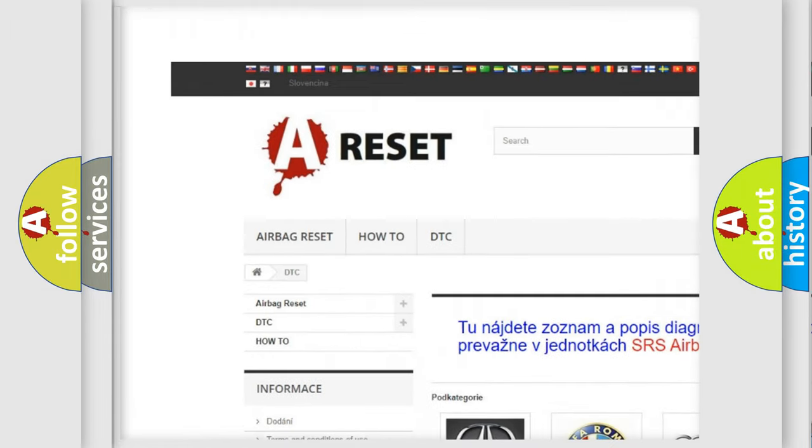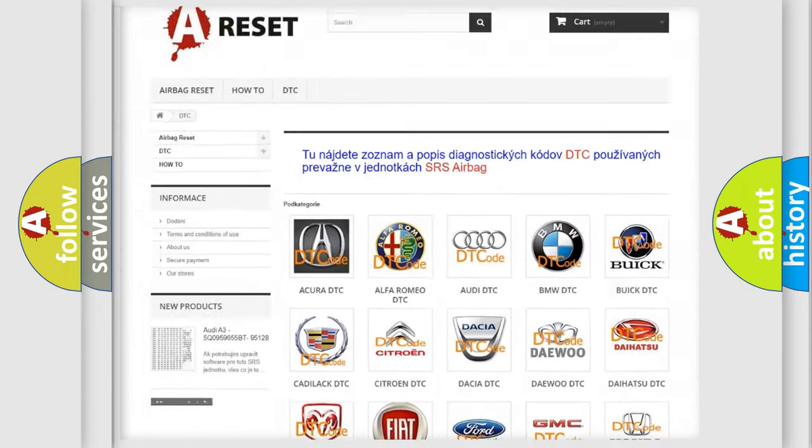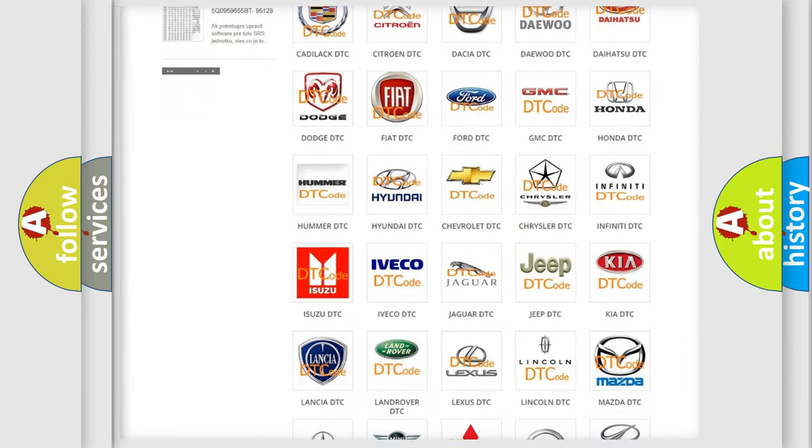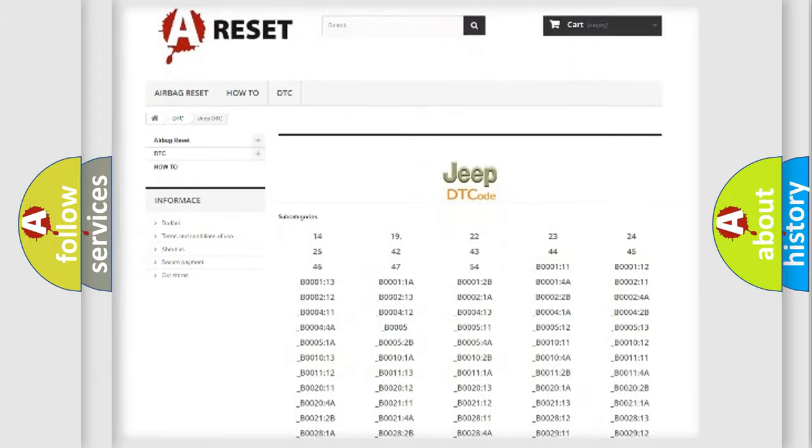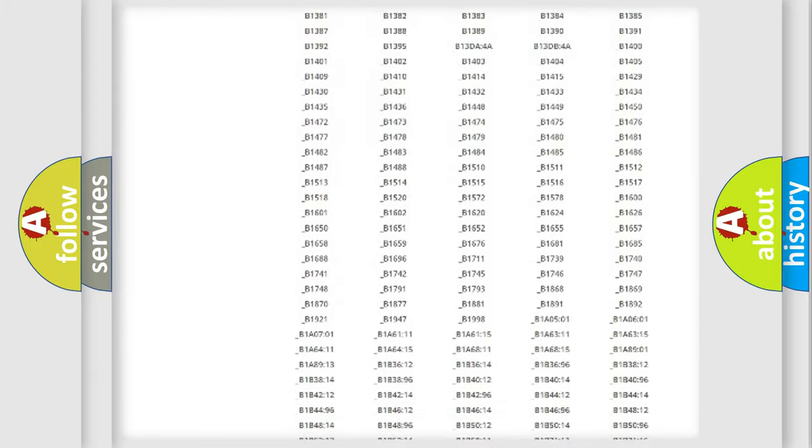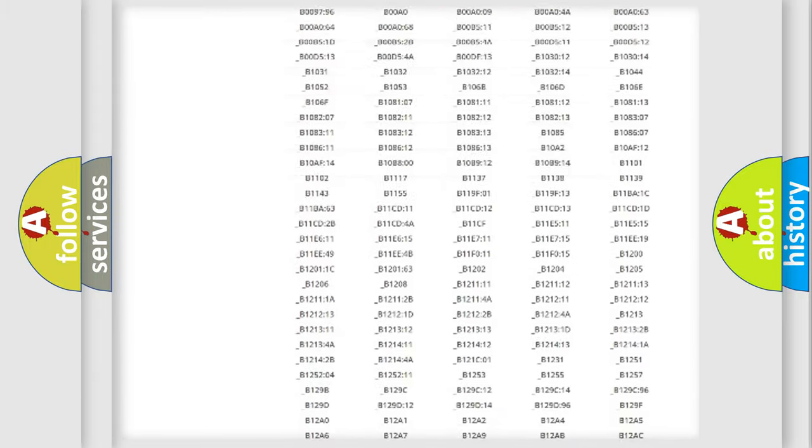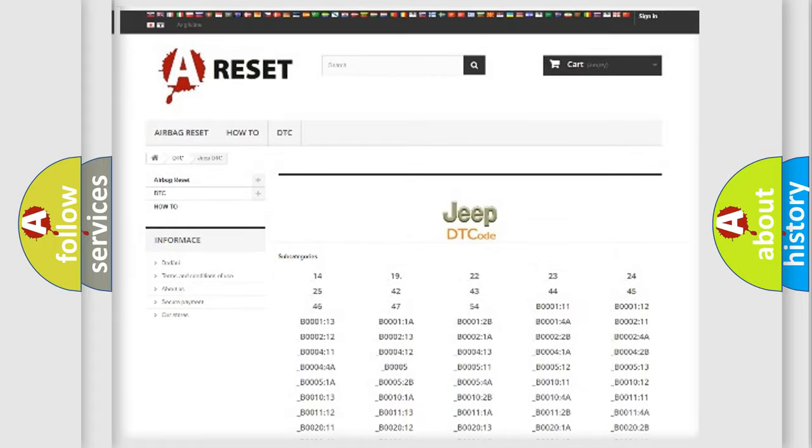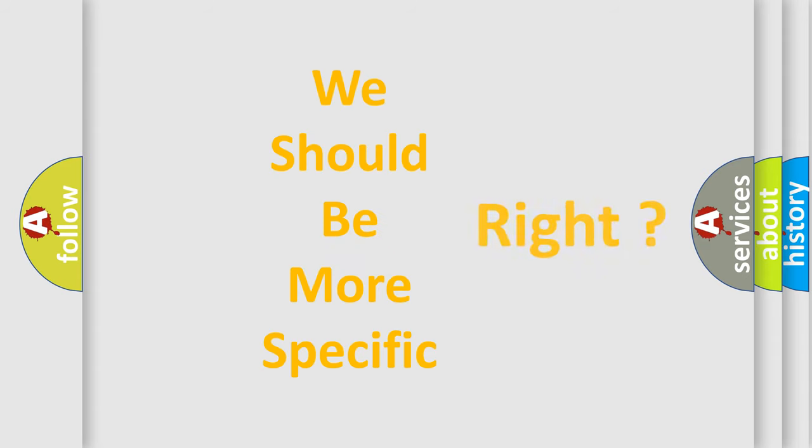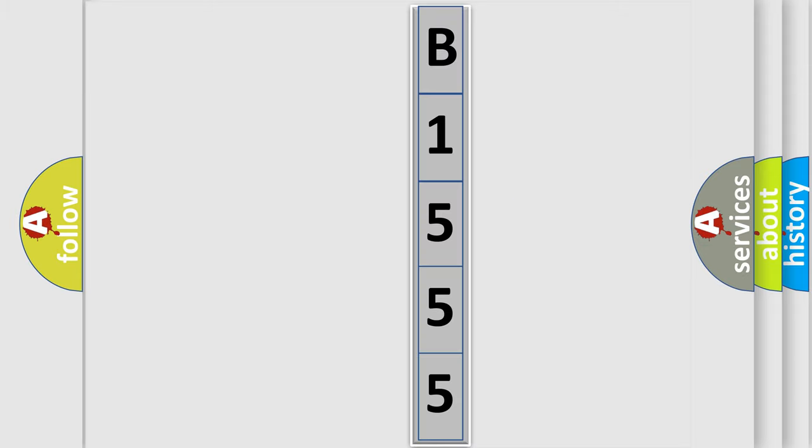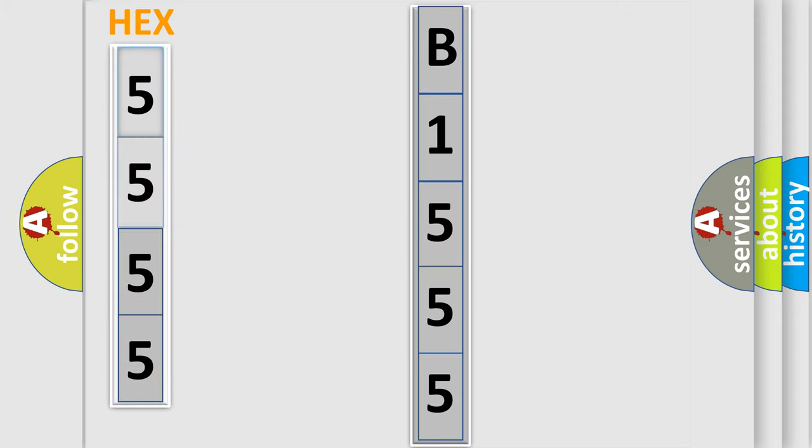Our website airbagreset.sk produces useful videos for you. You do not have to go through the OBD-2 protocol anymore to know how to troubleshoot any car breakdown. You will find all the diagnostic codes that can be diagnosed in Jeep vehicles, and many other useful things. The following demonstration will help you look into the world of software for car control units.